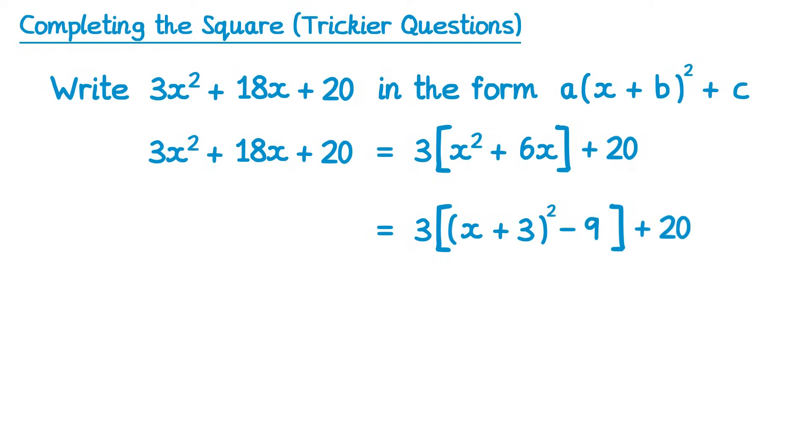For the next step, we're going to expand the larger one of the brackets. So 3 times all of this, which gives 3 bracket x plus 3 all squared, and then 3 times negative 9, which is negative 27. And of course there's still this 20 hanging around at the end, it can be easy to forget about that.